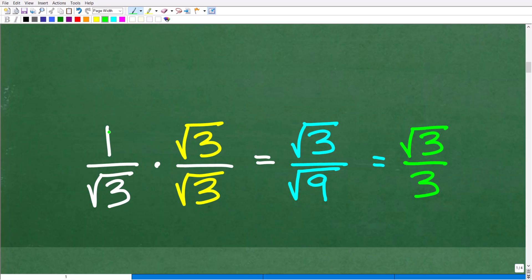Okay, so let's go ahead and multiply 1 over the square root of 3 times the square root of 3 over the square root of 3. And, of course, when you multiply fractions, we're going to multiply the respective numerators and denominators. So 1 times the square root of 3 is the square root of 3, and then the square root of 3 times the square root of 3 is the square root of 9.